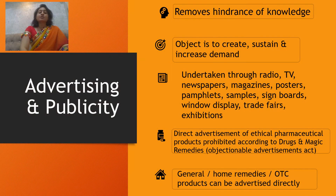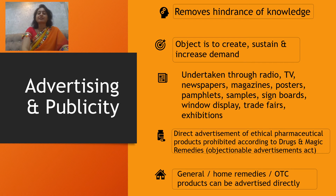The aids to trade also includes advertising and publicity. Advertising and publicity removes hindrance of knowledge. Its objective is to create, sustain, and increase the demand of the product. Advertising and publicity can be undertaken by radio, television, newspapers, magazines, posters, pamphlets, free samples, sign boards, window display, trade fairs, and exhibitions, among many other methods.